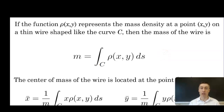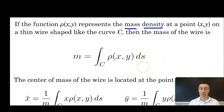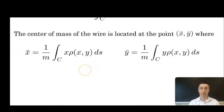Our last focus is on physical applications. If ρ(x,y) represents the mass density at a point (x,y) on a thin wire shaped like curve C, then the mass of the wire is the line integral along C of ρ(x,y) ds. We can extend this to center of mass: to find x̄, multiply the density function by x and divide by mass; for ȳ, multiply by y, integrate, and divide by mass.